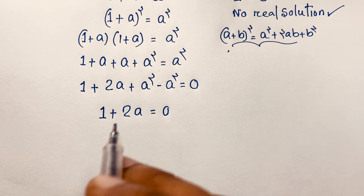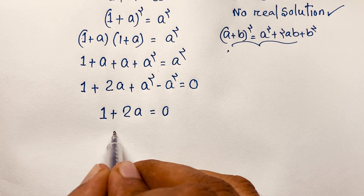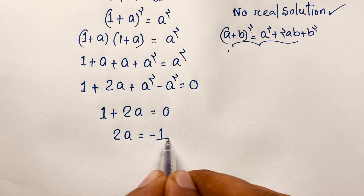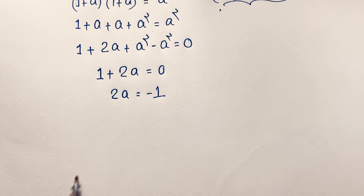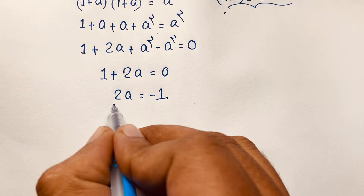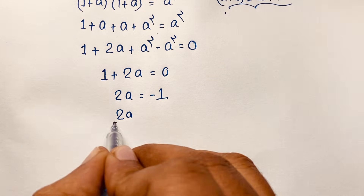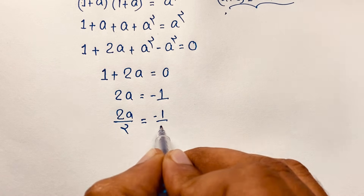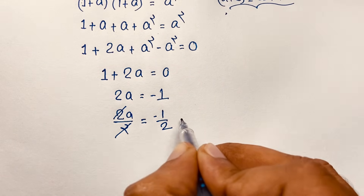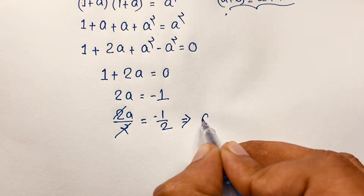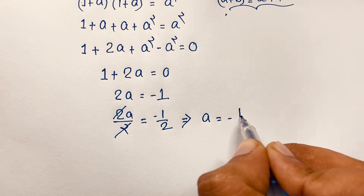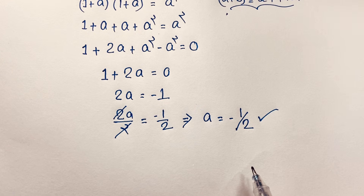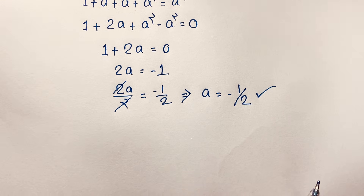Moving 1 to the other side gives 2a is equal to minus 1. Then dividing both sides by 2, we get 2a over 2 equals minus 1 over 2, and the 2's cancel. So our final answer is a is equal to minus 1 over 2. Let's verify this.